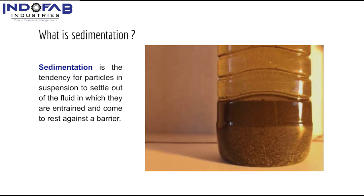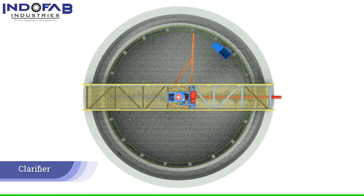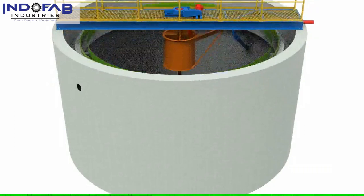Sedimentation is the process of phase separation. With time, the suspended solid particles in a slurry settle out naturally by gravity. This creates a clear liquid lying above the solid residue, as shown in the picture. The same separation of the suspension into settled solids and clear liquid occurs continuously inside a sedimentation tank.